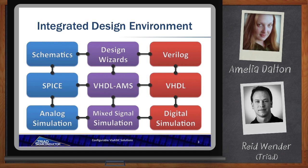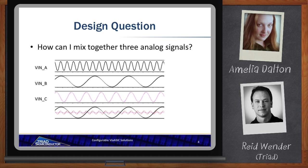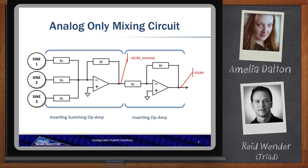Let's throw a problem at Via Designer. We're going to start out with a pretty straightforward example: we're going to mix together three analog waveforms — three sine waves — and come up with a summed composite waveform. A classic way to solve this is with op-amps: you take the three sine waves in, run them through an inverting summing amplifier, then take that inverted output back through an inverting op-amp, and voilà — we have the summation or mixing of those three analog waveforms.